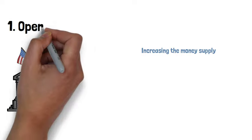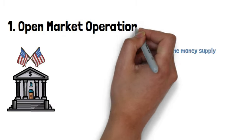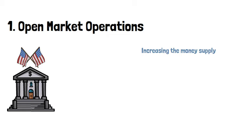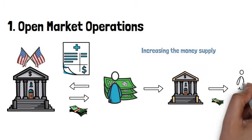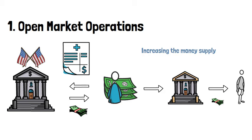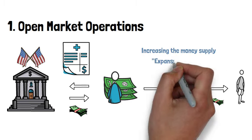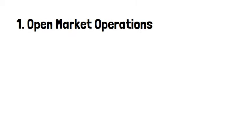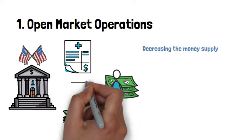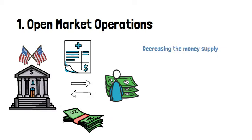There are three main ways to control the money supply. The first and most important method is through open market operations. Here, the central bank buys government bonds in the open market from investors. The money created to buy these bonds is deposited at banks and begins to circulate in the economy. Stimulating the economy by increasing the money supply is called an expansionary monetary policy. On the other hand, the central bank can reduce the money supply by selling bonds that it owns, thereby taking money out of the financial system. This is called a contractionary monetary policy and happens when there are concerns about inflation.